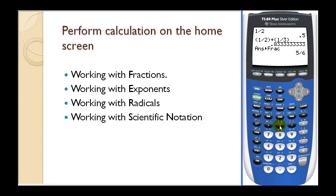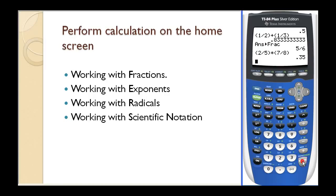Let's try another example. Let's say we want to perform two fifths times seven eighths: open parenthesis, two divided by five, close, times, open parenthesis, seven divided by eight, close. Press enter — this gives me a decimal. To convert this decimal to a fraction, we press math, enter, enter. And that would be seven twentieths.